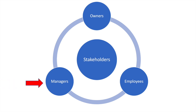Thirdly, managers are in direct control of a business and are employed by the owners to run it. Due to the divorce of ownership and control, managers have a clearer insight into the running of the business than do the owners. Once they've managed to earn a satisfactory level of profit for owners, they may aim to maximize their own welfare.